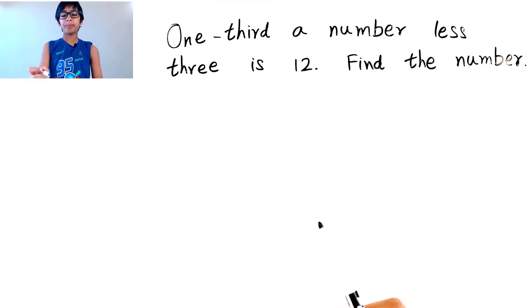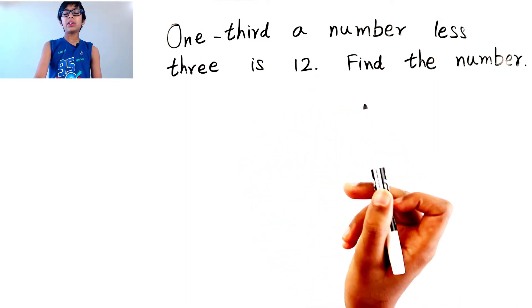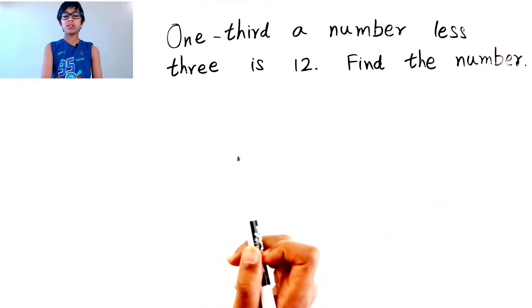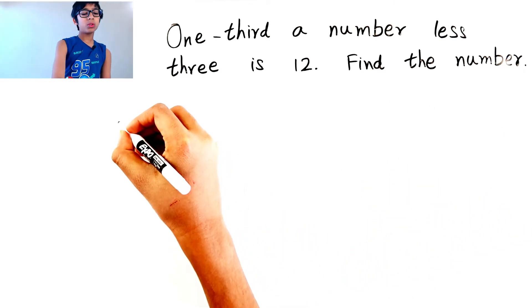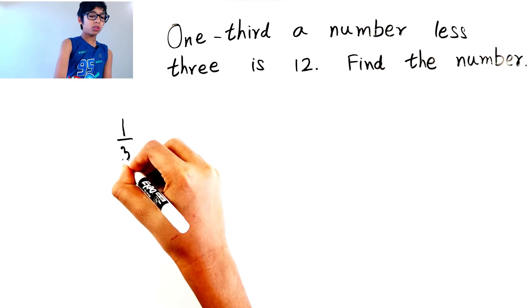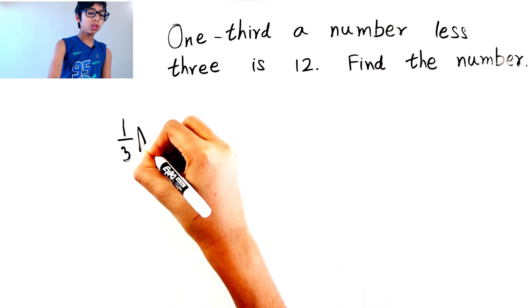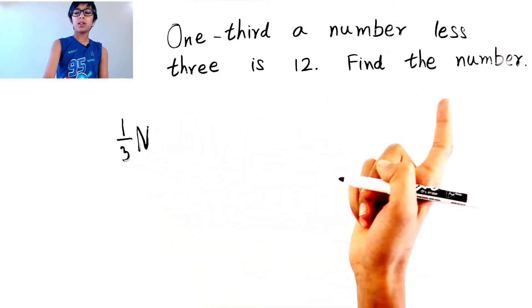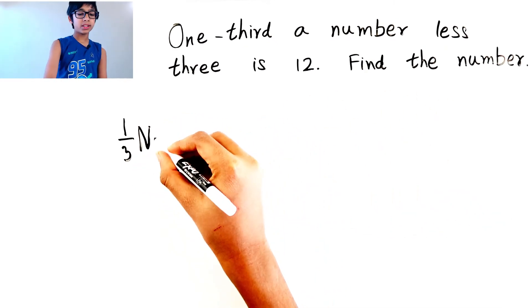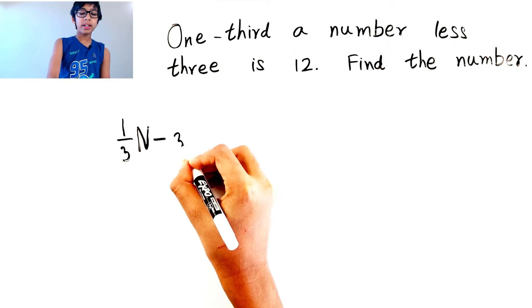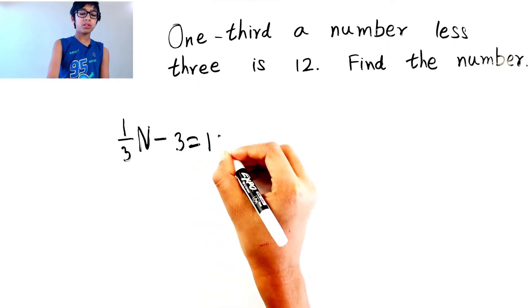So one-third n less 3 is 12. So that means one-third a number. So one-third n less - that'd be a minus. Minus 3 equals 12.